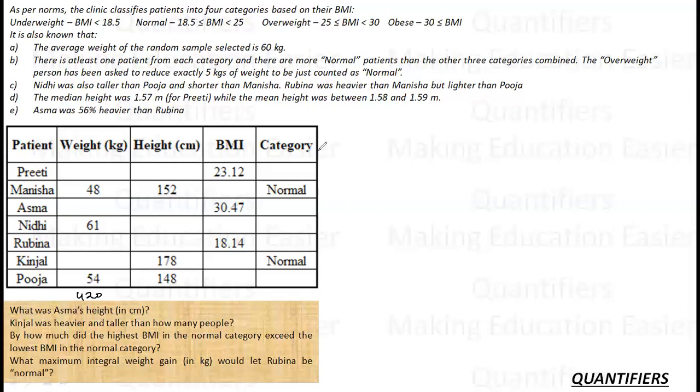The overweight person was asked to reduce exactly 5 kgs to be counted as normal. So overweight minus 5 equals normal. Nidhi was taller than Pooja and Rubina but shorter than Manisha.